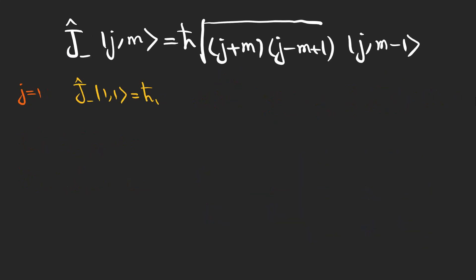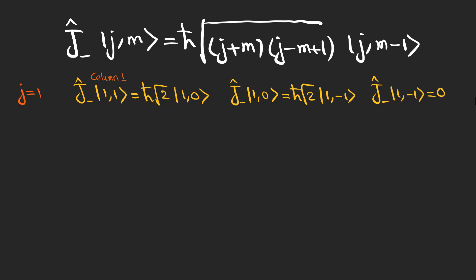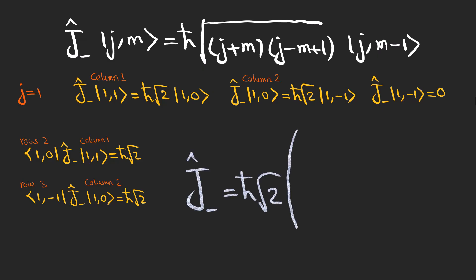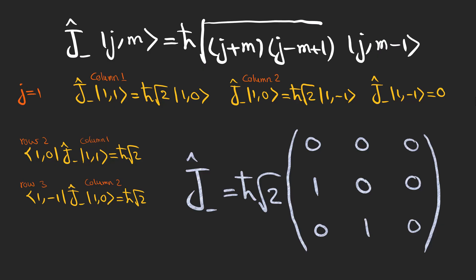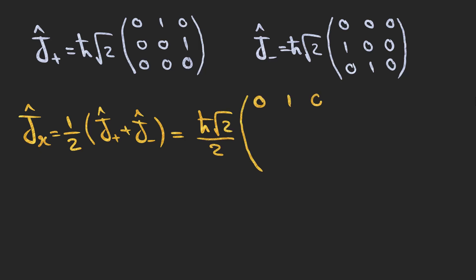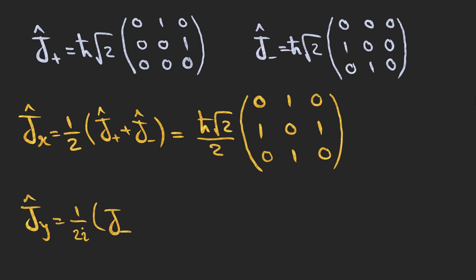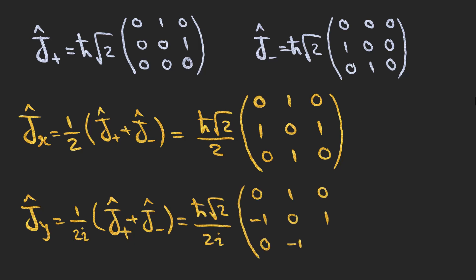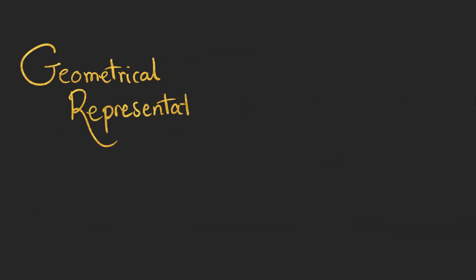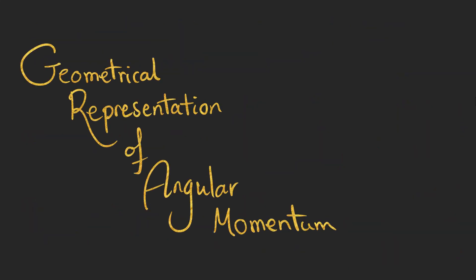We can do the same thing for the lowering operator. The first column, second column, and all elements on the third column are zero. So these are the only non-zero elements of the lowering operator matrix, located on the second row first column and third row second column. Now that we have J+ and J− matrices, we can find Jx and Jy operators and their matrix representations, which can also be written using the ladder operators. In the upcoming video, we are going to talk about the geometrical representation of angular momentum.